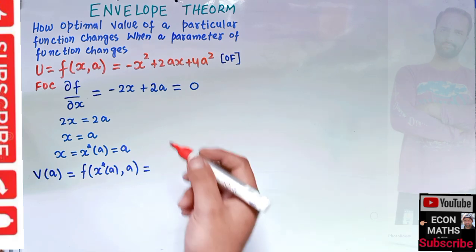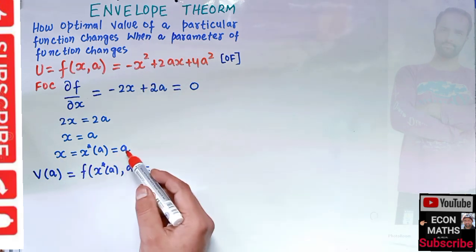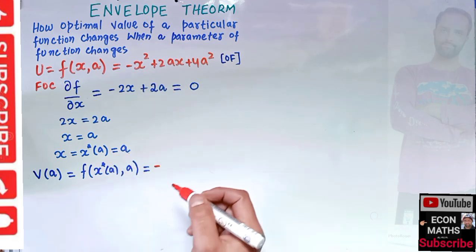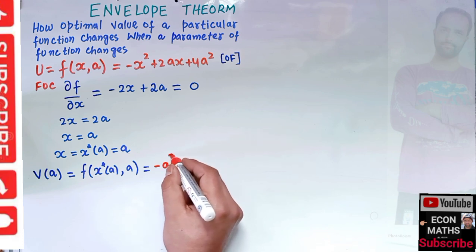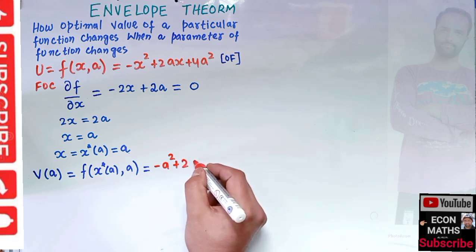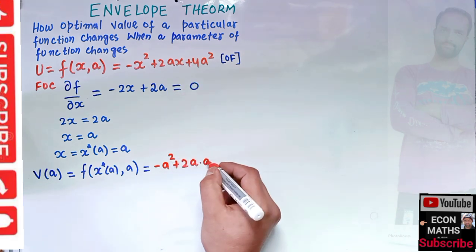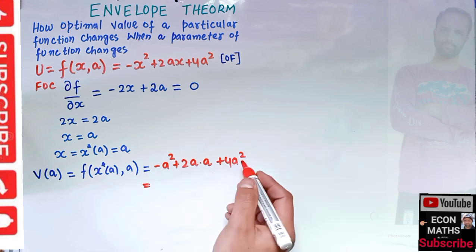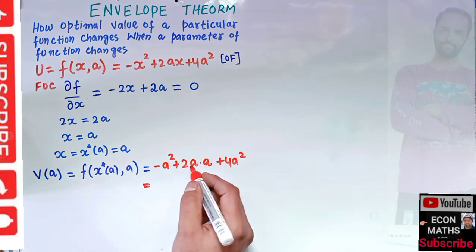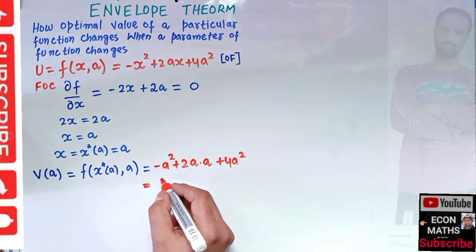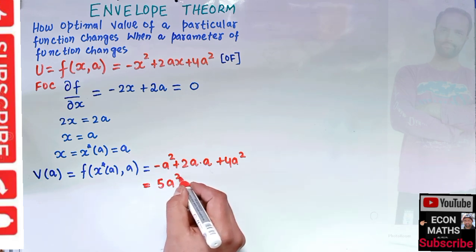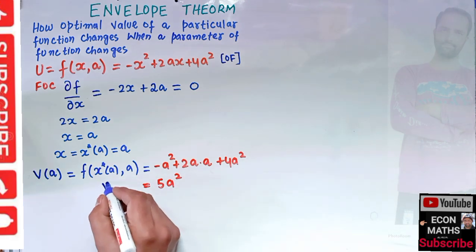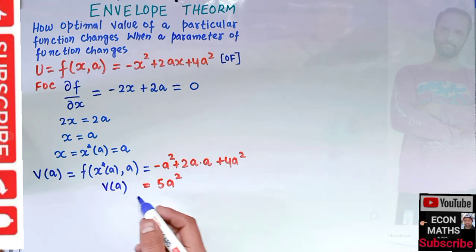Substituting x equals a into the objective function: we replace x squared with a squared, giving minus a squared plus 2a·a plus 4a squared. Simplifying: 4a squared plus 2a squared minus a squared gives us V(a) equals 5a squared.